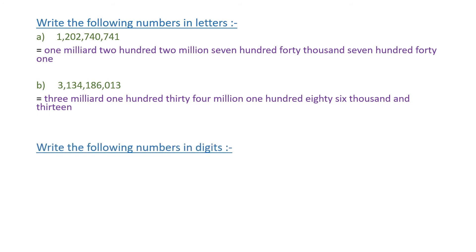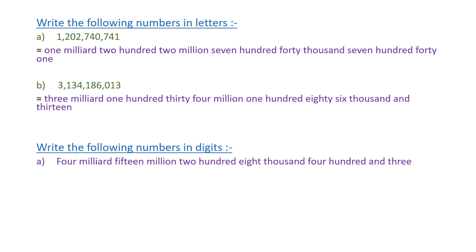Now write the following numbers in digits. Letter A: four milliard, fifteen million, two hundred eight thousand, four hundred and three. The first family is milliard, so I write four and make a comma. Then fifteen million — I write 015 because there is no hundred-million digit, so I write zero in the hundreds place and write fifteen, then comma. Then two hundred and eight in the thousands family, then four hundred and three.